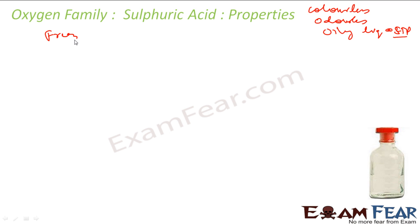It freezes at 283 Kelvin — that is the freezing point. And if you want to boil it, it will boil at 611 Kelvin. It can easily dissolve in water and generates a large amount of heat when it dissolves. And thus, when you want to dilute sulfuric acid, extra care has to be taken.